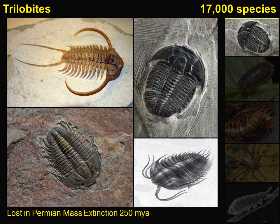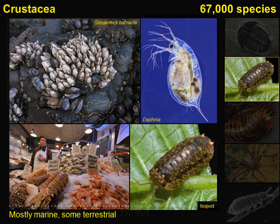Trilobites flourished during the Lower Paleozoic before slipping into a long decline. Much of the trilobite diversity was lost during the Devonian, and trilobites finally disappeared in the mass extinction that ended the Permian about 252 million years ago. Trilobites filled a wide range of ecological roles including predators, scavengers, and filter feeders. Some lived on the sea floor, some swam and fed on plankton, and some were amphibious. The largest trilobites were about 45 centimeters long and weighed four and a half kilograms. About 17,000 species are known, and more are described every year.